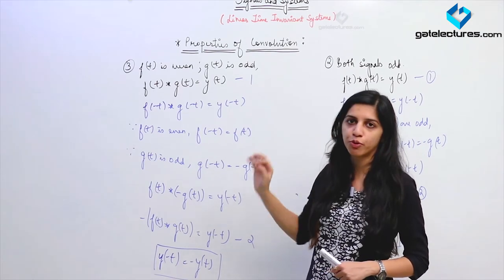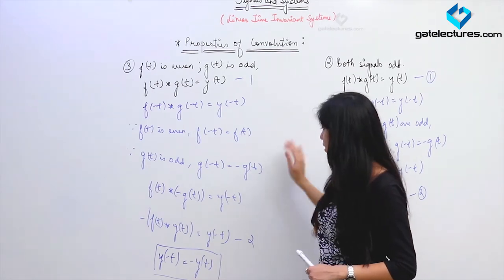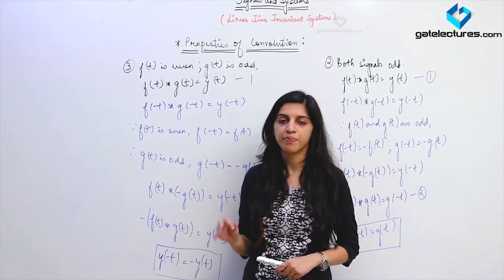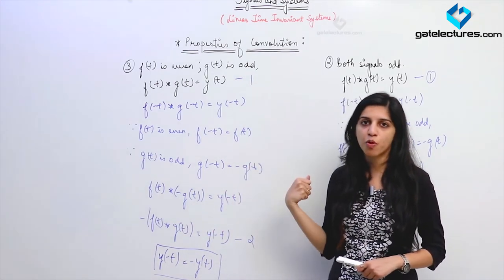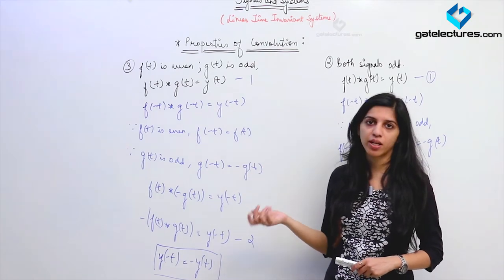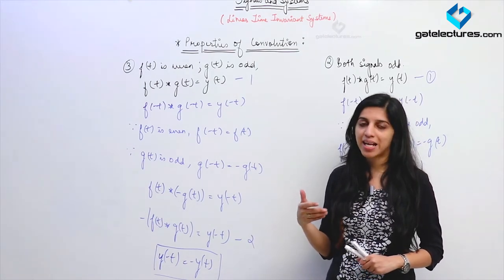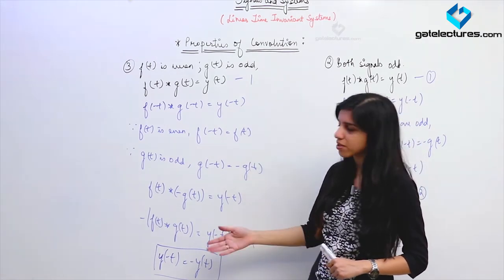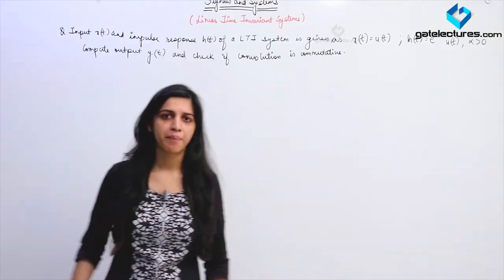This property will not typically be asked for proof, but in multiple choice questions where signals are depicted graphically and you are asked to depict their convolution, you can use this property to eliminate options — checking if signals are even or odd saves time without performing the actual convolution.